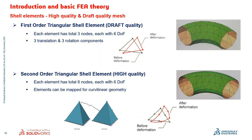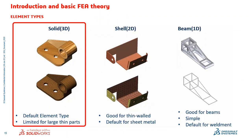Then we have shell elements — thin elements that use triangular meshing rather than solid tetrahedral mesh. Shell elements have three nodes each with six degrees of freedom: three translational and three rotational components. Similarly, we have the first-order triangular shell element (draft quality) and the second-order triangular shell element (high quality), which forms very neatly. Based on the accuracy of results you need to produce, you create your meshes accordingly.